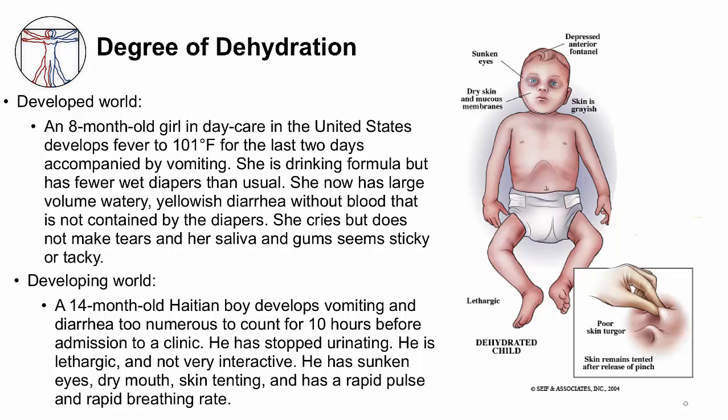The second case is from a developing country. This child develops a very severe watery diarrhea from cholera. He has gone beyond being very thirsty and actively drinking. Now he's lethargic — he doesn't look at you when you examine him and doesn't even cry. He has stopped urinating to conserve water. On exam, his eyes look sunken, his mouth is dry, and when you pinch his skin, it has lost its elasticity or turgor and remains raised. His vital signs are also worrisome — he has tachycardia and tachypnea. The drawing on the right illustrates some of these features.